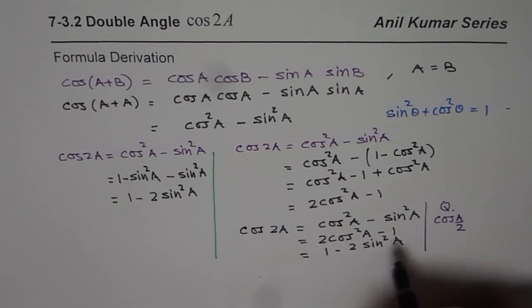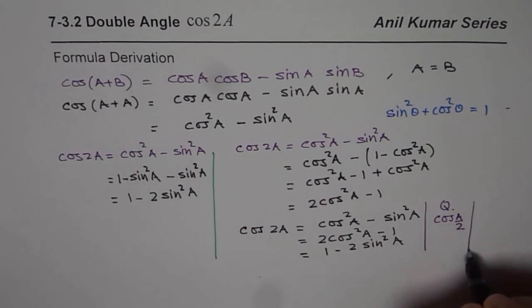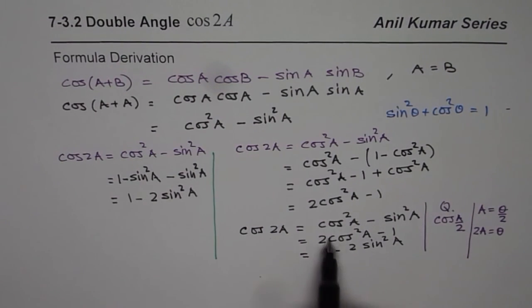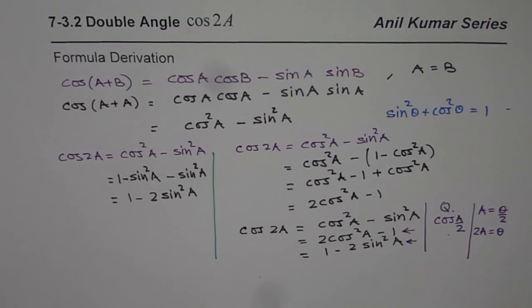If I write cos theta by 2, it would be easy for you. Let us say in this equation, if you substitute A as theta by 2, then 2A will be theta. That should help you to find half-angle formula from this type of equation. Basically, if you use these equations, then it is possible for you to find half-angle formula from the double-angle formula.